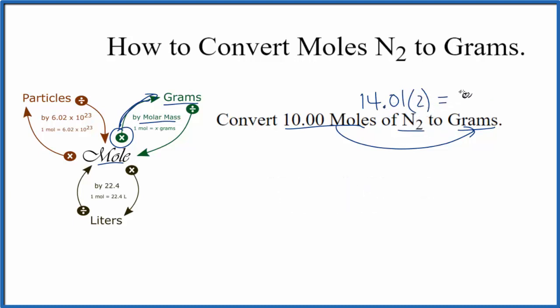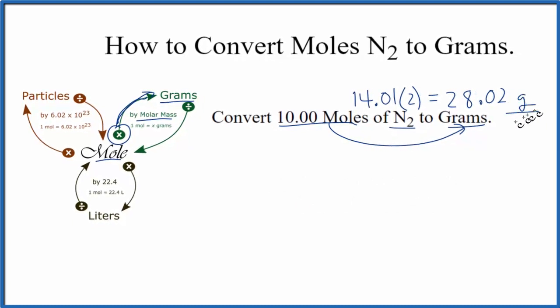So we end up with 28.02 grams per mole. That's the molar mass. So now we're just going to take the number of moles, multiply it by the molar mass to get grams. Let's do that.